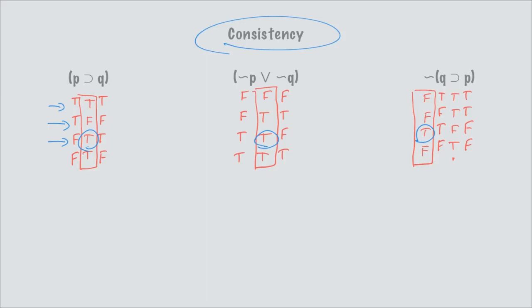This set of statements is consistent because there is at least one row in their joint truth table in which all statements are simultaneously true. As long as you know the definition of consistency, there's nothing new here. Memorize the definition, work neatly, and these problems are not particularly difficult. The only complications are lining up your truth table properly and knowing your truth tables for each connective.